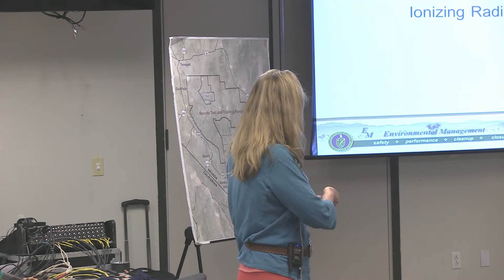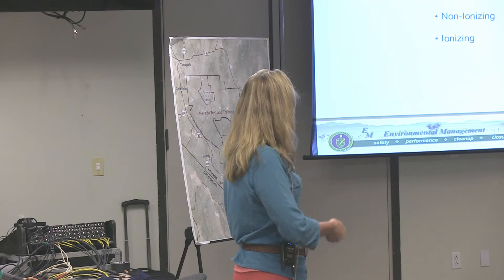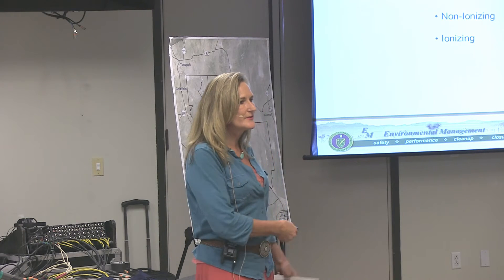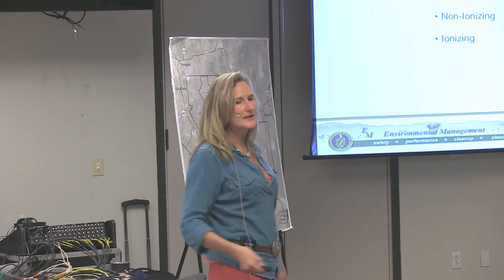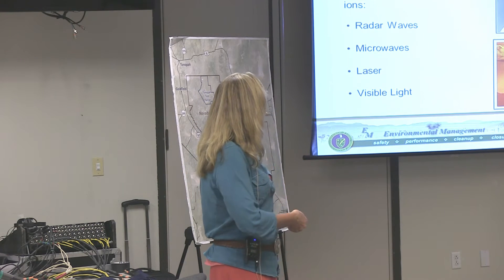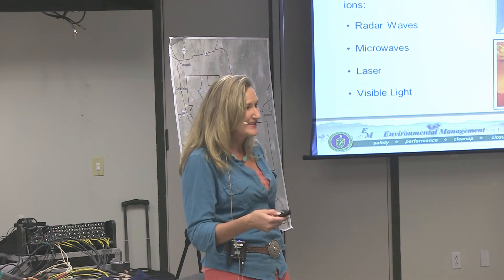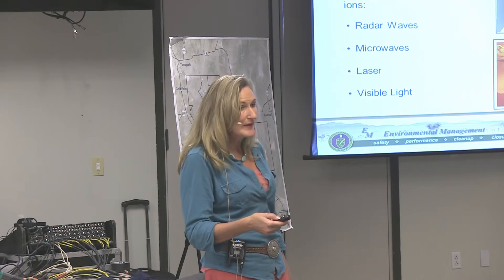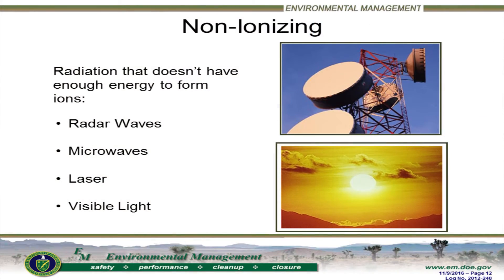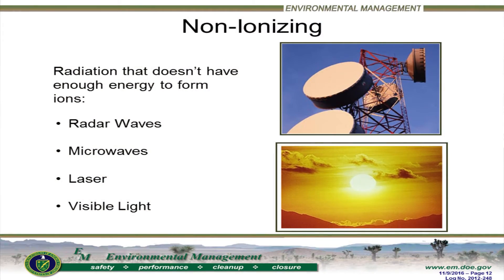So what is ionizing radiation? We are totally surrounded by radiation. When it's very low energy, you can have radar waves, microwaves, lasers, and visible light — all known as non-ionizing radiation.